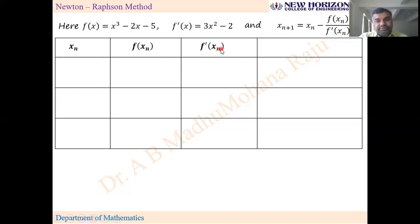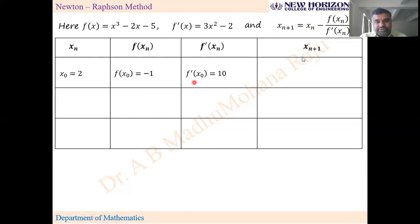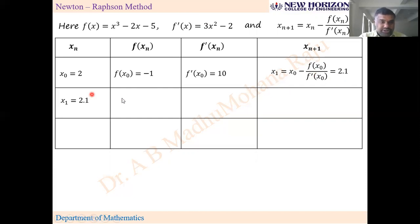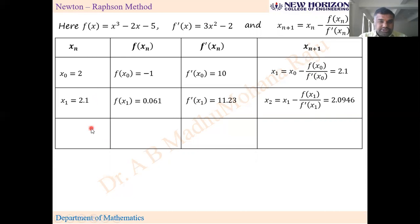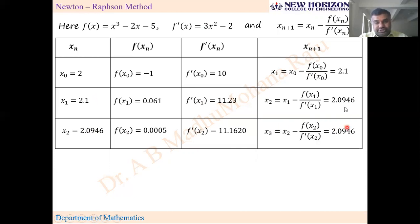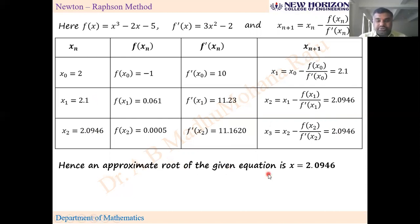We'll take a table with columns: xₙ, f(xₙ), f'(xₙ), and xₙ₊₁. Starting with x₀ = 2: f(x₀) = -1, f'(x₀) = 10. Substituting into the formula gives x₁ = 2.1. Then using x₁ = 2.1 we get x₂ = 2.0946. Using x₂, we compute x₃ — since x₂ and x₃ are both the same, we stop. The approximate root is x = 2.0946.